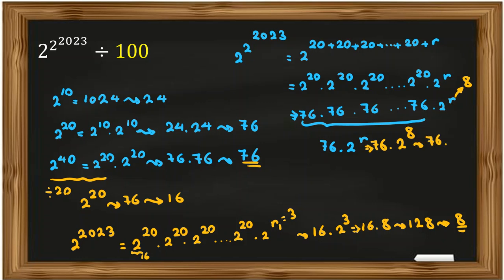We should calculate the last two digits of 76 times 2 to the 8. Now 2 to the 8 is 256, so the last two digits are 56. Let's multiply 76 times 56: 6 times 6 is 36, carry 3; 6 times 7 is 42 plus 3 is 45, carry 4; 5 times 6 is 30. So the last two digits are 56. The answer is 56.